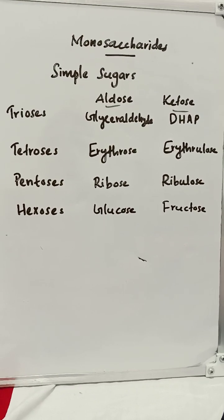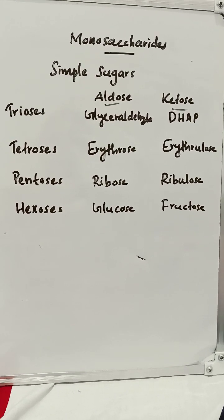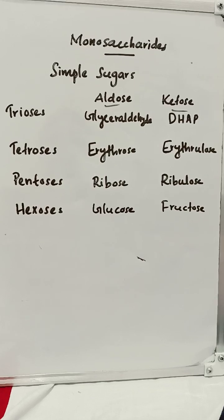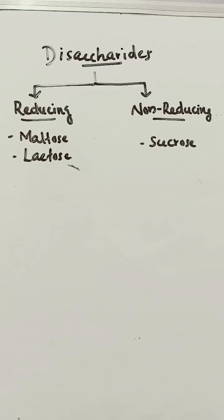For tetroses: erythrose and erythrulose. For pentoses: ribose and ribulose. For hexoses: glucose and fructose.